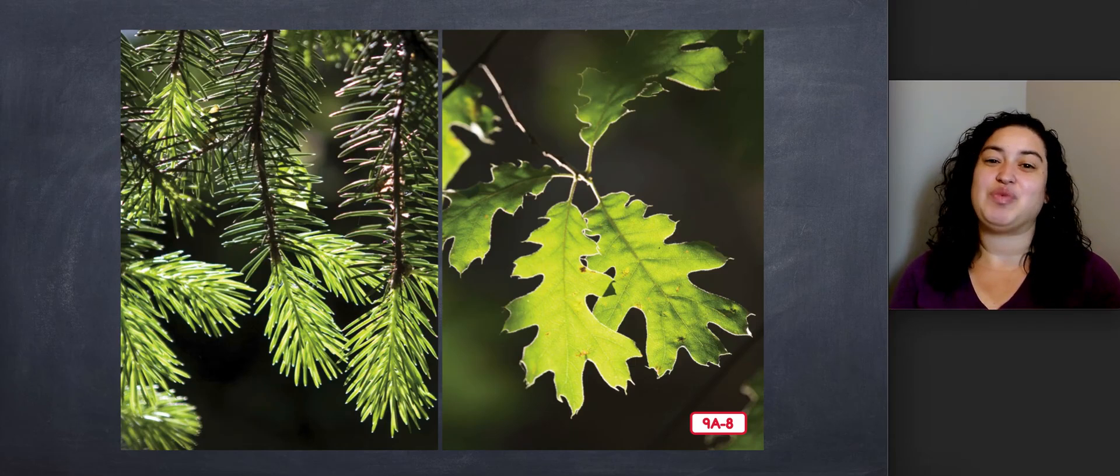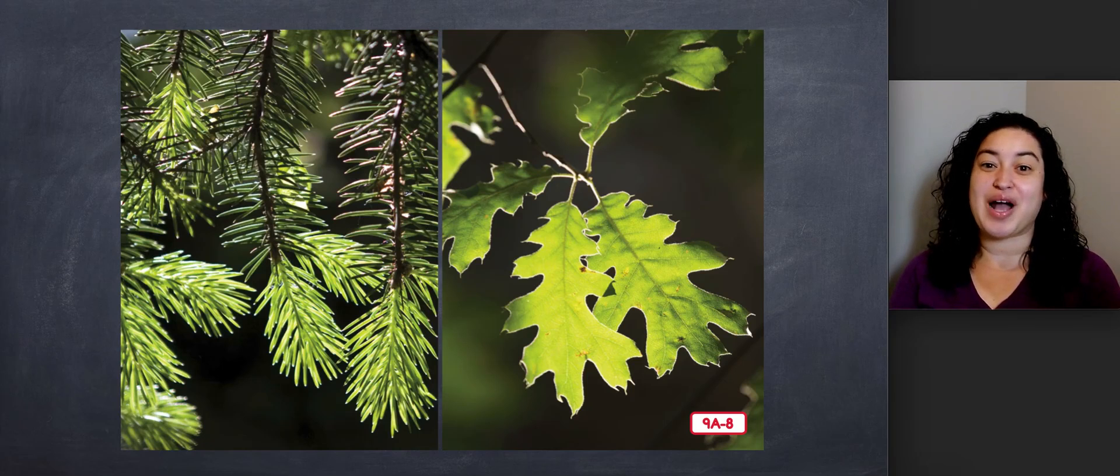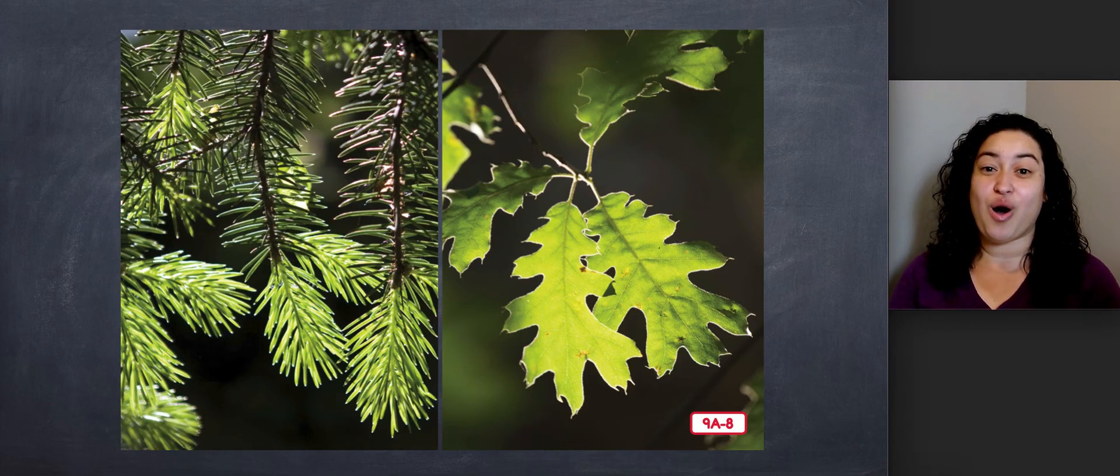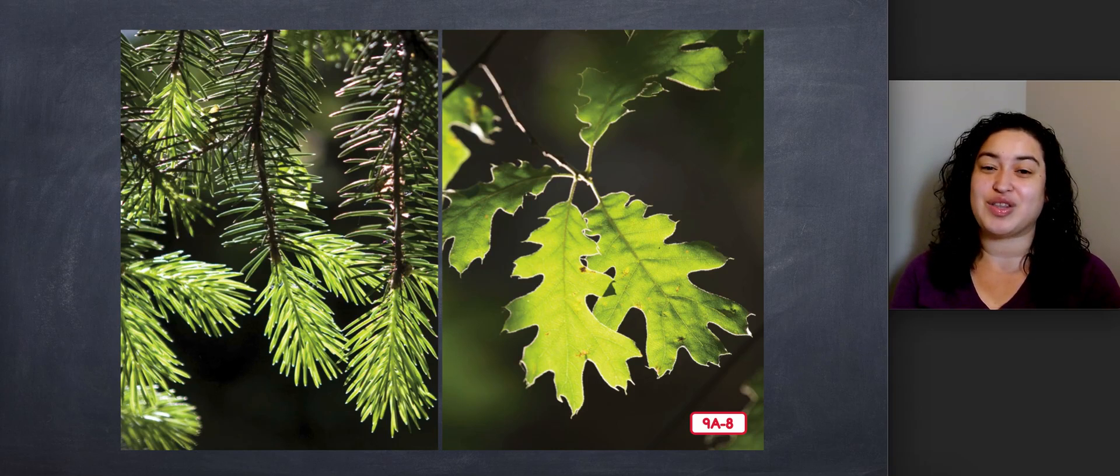So the next time you go outside or you go for a ride in the car, try to look at the trees around you and point out if they are evergreen trees because they are always green or if they are deciduous trees because they are going to lose or have already lost their leaves. That is the end of the lesson for today. So go ahead and answer the questions.